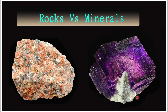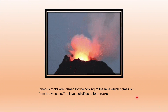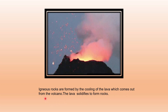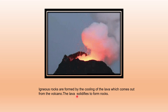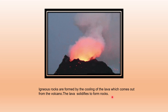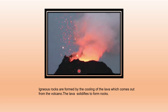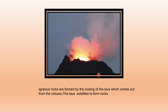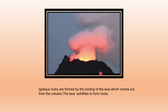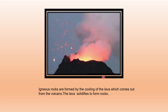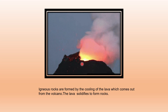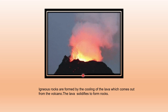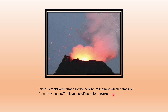Let us first learn about igneous rocks. Igneous rocks are formed by the cooling of the lava which comes out from the volcano. The lava solidifies to form rocks — these are rocks which are formed by fire, that is why they are known as igneous. The word igneous is derived from a word meaning fire. These rocks formed due to the molten magma or lava being cooled and solidified are known as primary rocks.